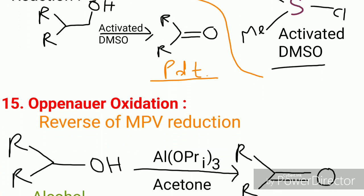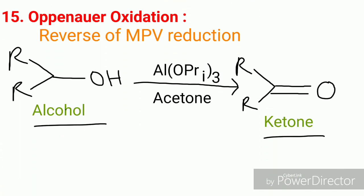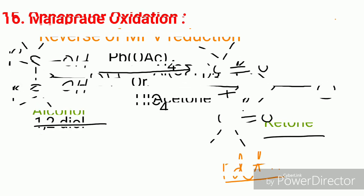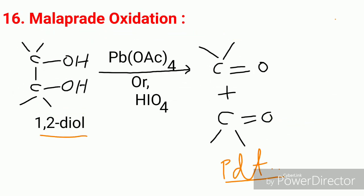Next is Oppenauer oxidation, which is the reverse of MPV reduction. Here an alcohol is converted to a ketone by aluminium triisopropoxide, using acetone as the solvent. This is a reversible reaction; the reverse reaction of this is called MPV reduction.